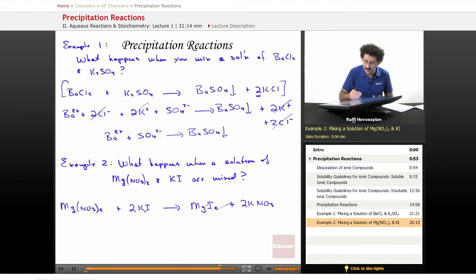I stick a 2 in front of the K on the left. That gives me 2 potassium and 2 iodide. There's 2 iodide on the right. I'm fully balanced. All I needed was a 2 here and a 2 there.